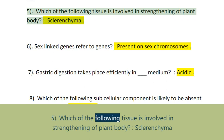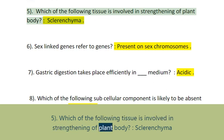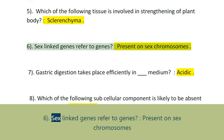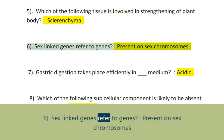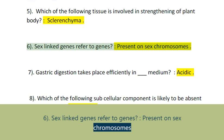Question 5: Which of the following tissue is involved in strengthening of the plant body? Sclerenchyma. Question 6: Sex-linked genes refer to genes present on sex chromosomes.